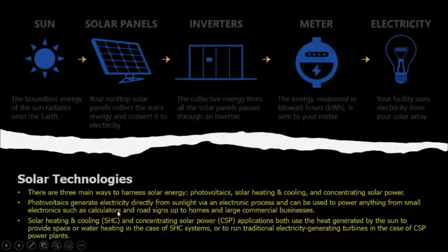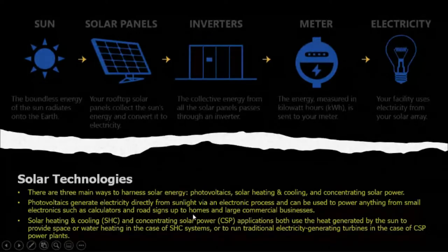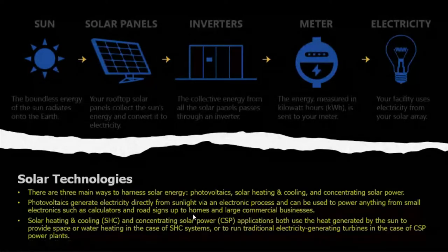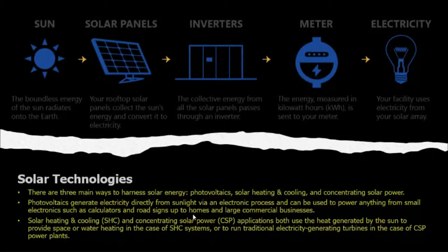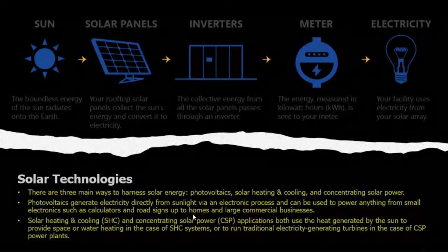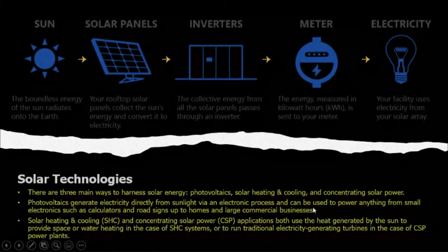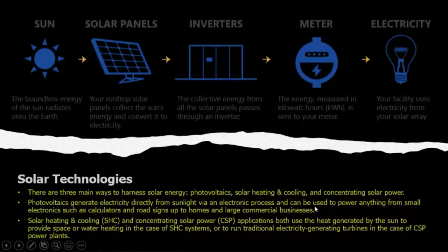Photovoltaics generates electricity. Photons in the visible spectrum in the wavelength range of 0.4 to 0.7 micrometers carry energy that falls on the solar panel; from there electrons are initiated and current is generated.